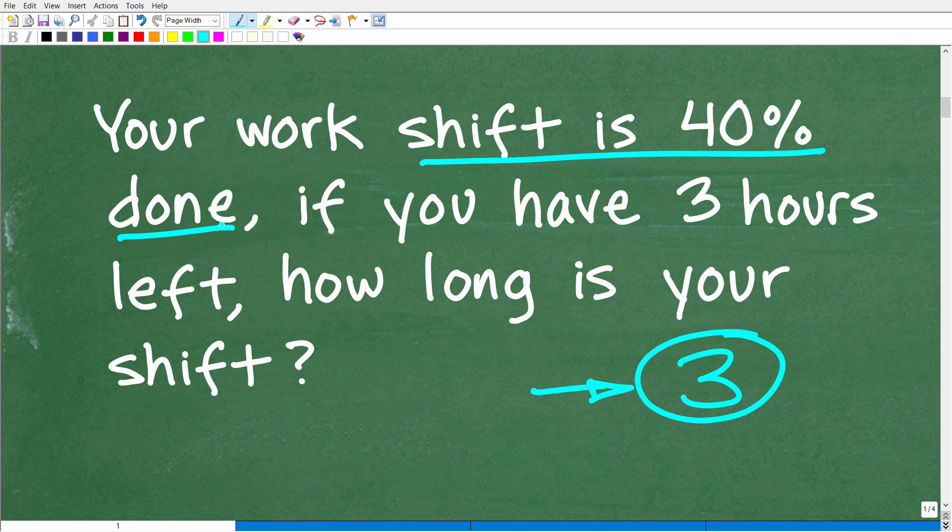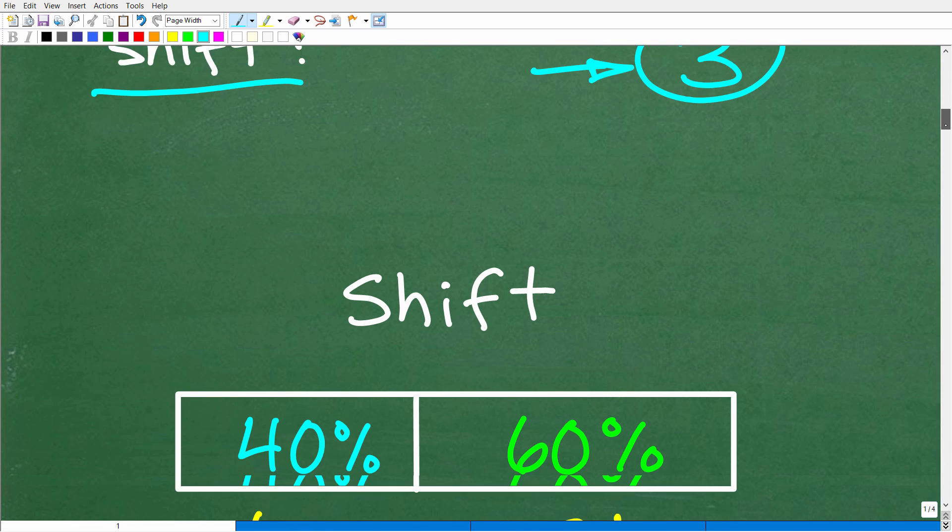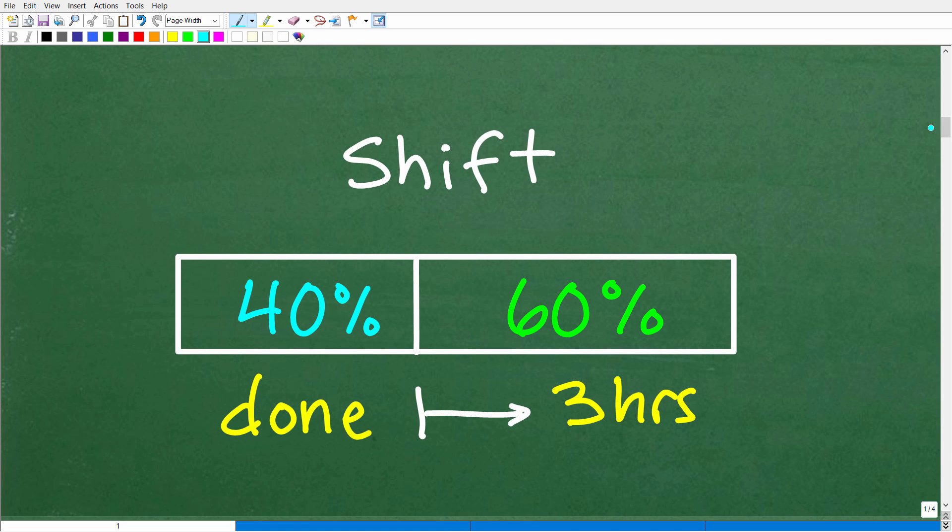So our work shift is 40% done. So we're pretty excited about that. So we have, obviously, some more work to go. Okay, then if we're 40% done, how much more work in terms of percent do we have to go? Well, hopefully, you're saying 60% more until I'm finished. So if you have three hours left, how long is your entire shift? So let's go ahead and model this question this way. So here is our shift. So let's call it this entire span right here in hours. Now, what we know is that we are 40% completed with our shift. So 40% done with the shift, that means we have 60% more to go.